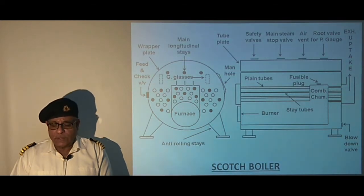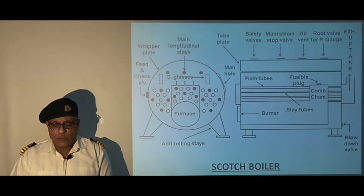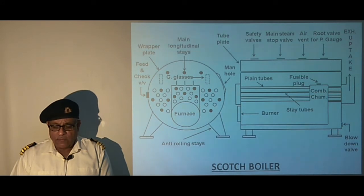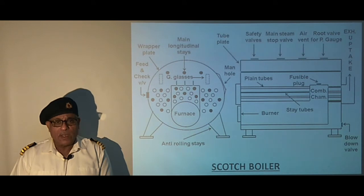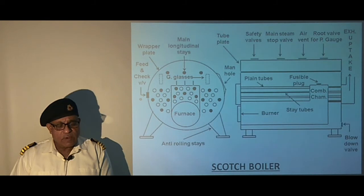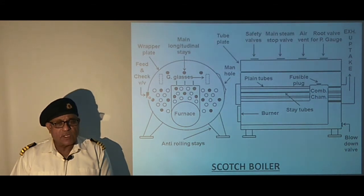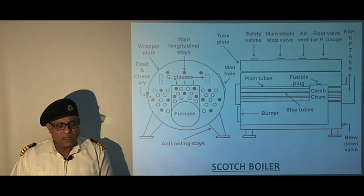The internal feed pipe is closed at the ends and is perforated throughout its length to distribute relatively cold feed water over a large space, avoiding local cooling of the hot boiler plate and tubes. Feed water is supplied through a feed and check valve, and inside there is an internal pipe with perforations so that cold water is distributed along the length of the boiler.